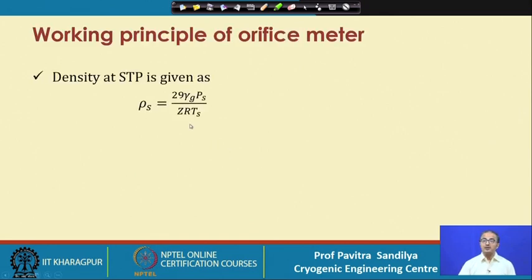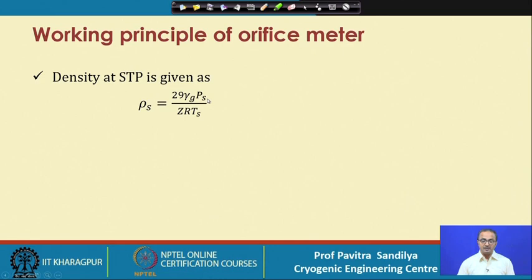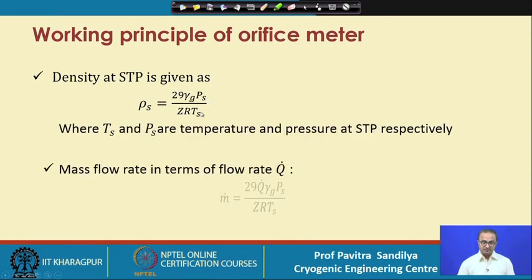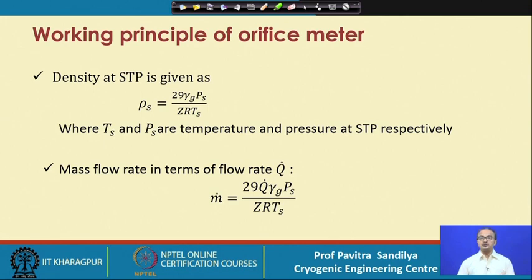In natural gas industry, we always refer to standard conditions. We define the density at standard conditions using the same gas law but substituting standard pressure and standard temperature, and then express the mass flow rate in terms of standard conditions. We must remember the mass flow rate remains the same irrespective of pressure and temperature, but the volumetric flow rate changes with pressure and temperature.